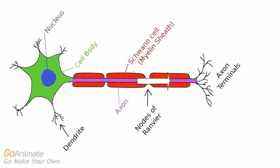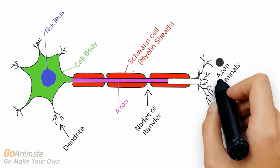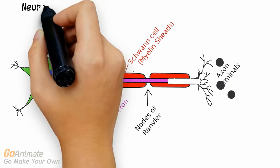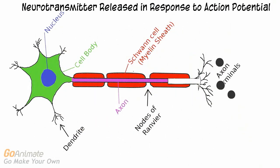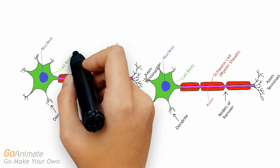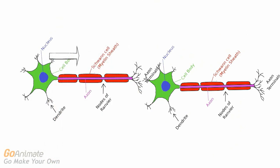Action potentials travel or propagate down the axon of a neuron until reaching the axon terminal. The axon terminal responds to the action potential by releasing a neurotransmitter. Action potentials allow neurons to transfer information throughout the nervous system.